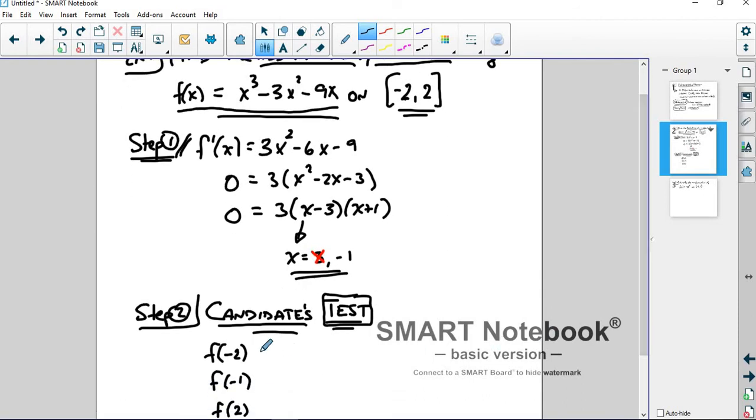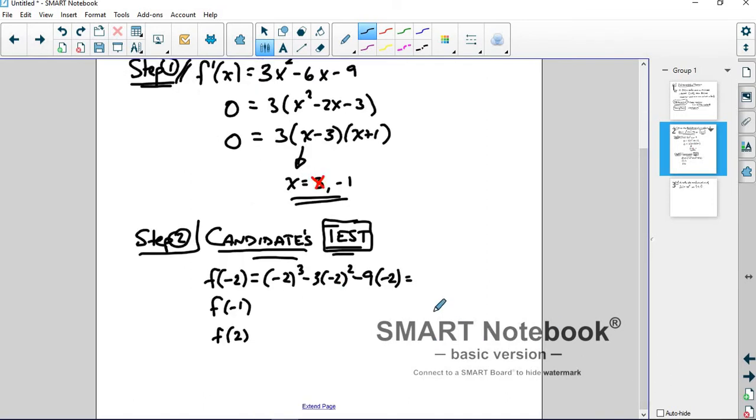It's that simple. And so when we plug these in, we get (-2)³ - 3(-2)² - 9(-2), right? Use your calculator, be smart about this, don't try to do that in your head. That evaluates to be -2.